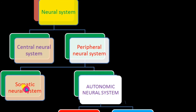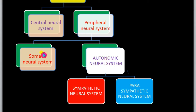The somatic neural system is under conscious control, so it contains both sensory and motor neurons. Sensory somatic neurons conduct sensory impulses from different somatic receptors to the central nervous system. Somatic motor neurons conduct impulses from the central neural system to the effector organ, especially the skeletal muscles. The function of this somatic neural system is excitation — it receives impulses consciously, so it is voluntary in function.